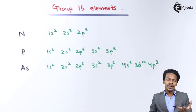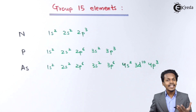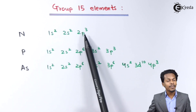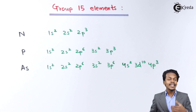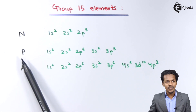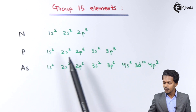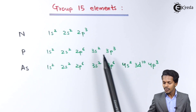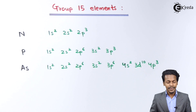Nitrogen has an atomic number of 7, so we can write the electronic configuration as 1s2, 2s2, 2p3. The next element belonging to group 15 is Phosphorus, and it has the electronic configuration as 1s2, 2s2, 2p6, 3s2, 3p3, because the atomic number of Phosphorus is 15.